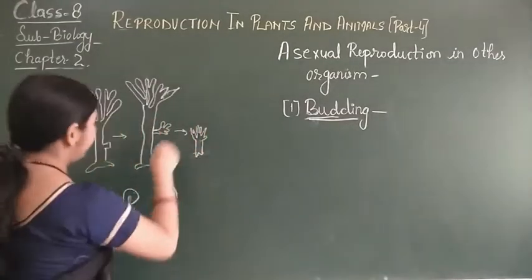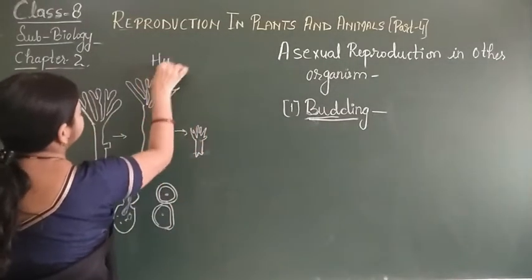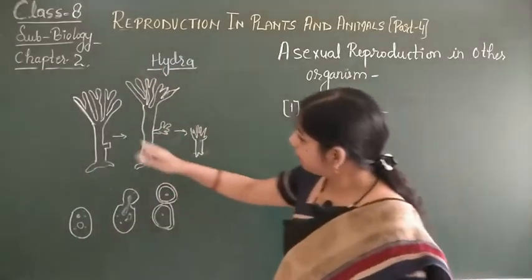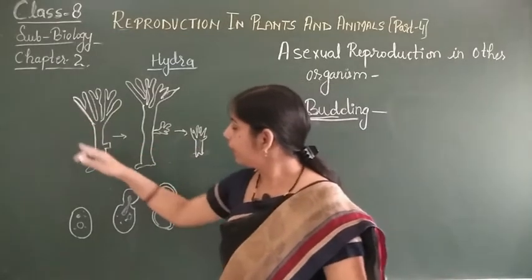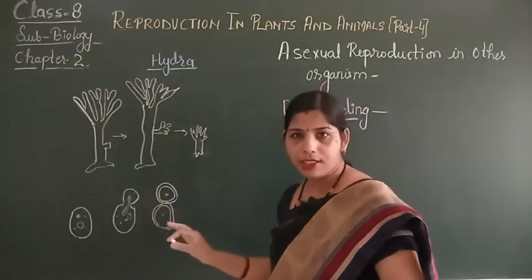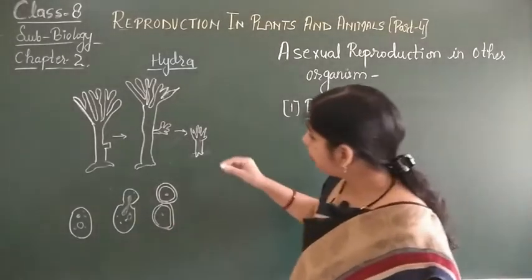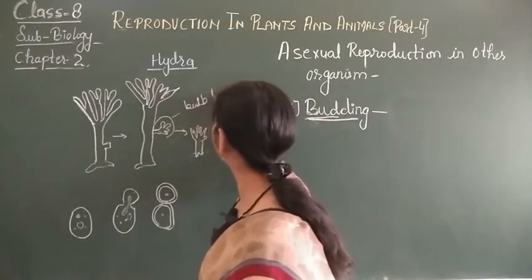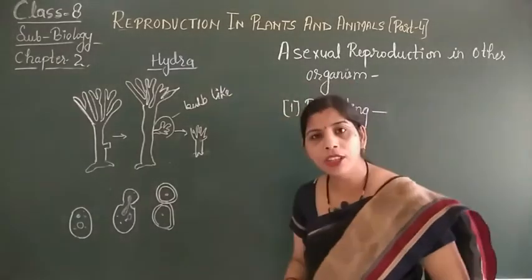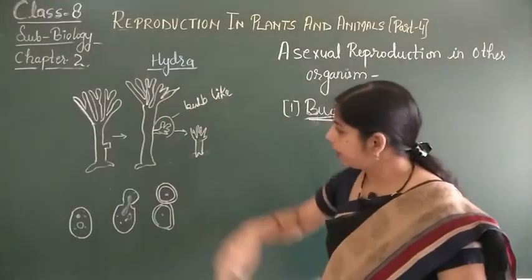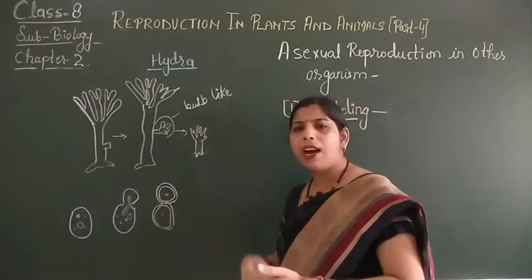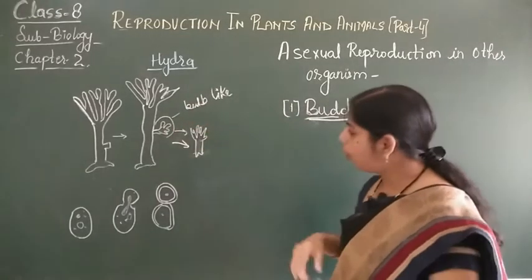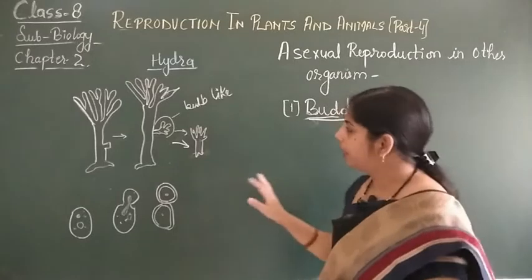I am going to show you how this process takes place — first in Hydra. This is the structure of Hydra. When the favourable condition is there, one bulb-like projection grows from the surface of the Hydra, and eventually, after some time, it is detached and forms a new Hydra structure.